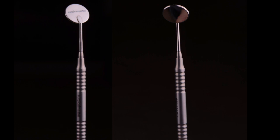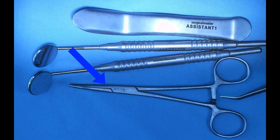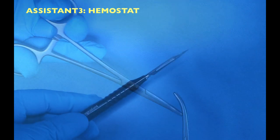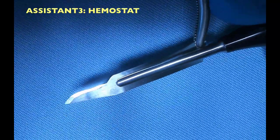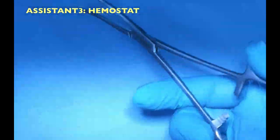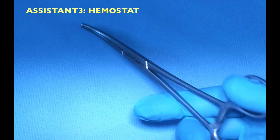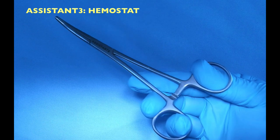The last tool, the third tool, is called Assistant Three, and that's a hemostat. We use the hemostat to remove blades from the blade holder carefully with no injuries. We use it to stabilize a suture when we do continuous sling sutures for grafting. We typically lock in the end of the suture, sometimes to loosen up a temporary crown. It's a useful tool.